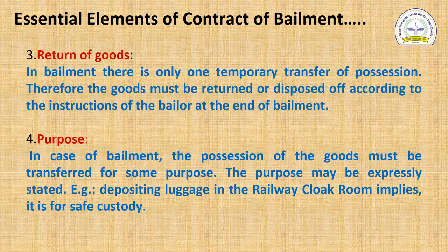The fourth essential element is purpose. In the contract of bailment, the possession of goods must be transferred for some purpose. The purpose may be expressly stated or it may be implied — implied means inferred from the conduct, action, or circumstances. For example, if a person deposits luggage in a railway cloakroom, it implies he is delivering it for safe custody.